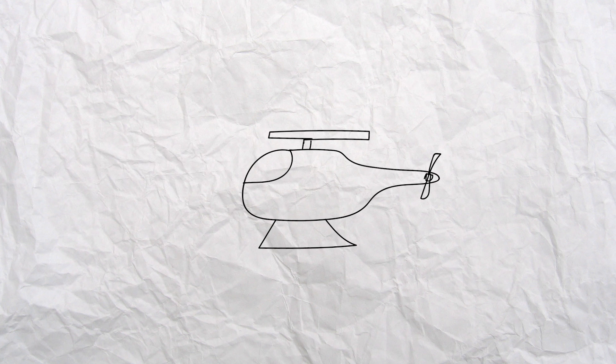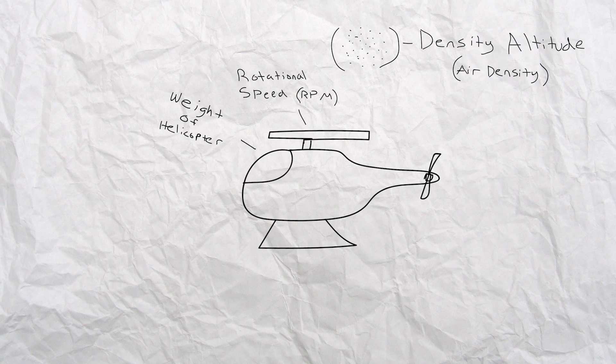These factors are the density altitude, which is the density of the air around the helicopter, the gross weight of the helicopter, which is basically just the weight of the helicopter, the rotor rotational speed, which is the revolutions per minute that the rotary wing makes, and finally forward airspeed.